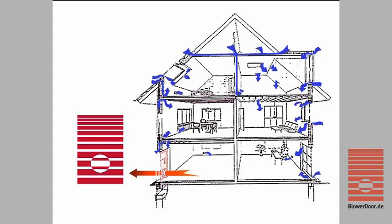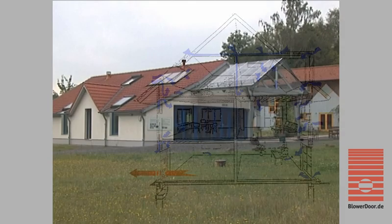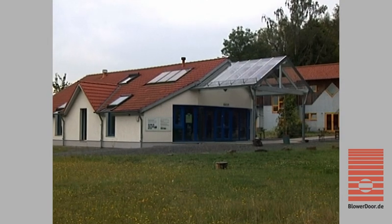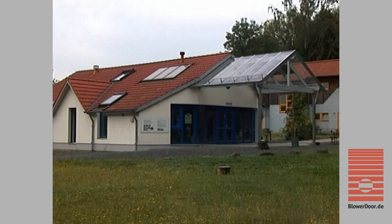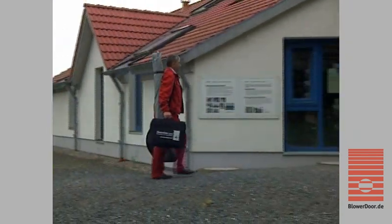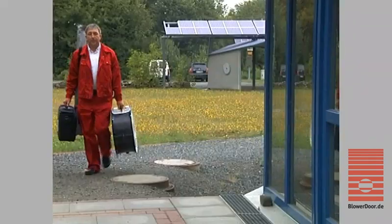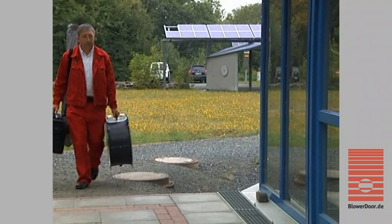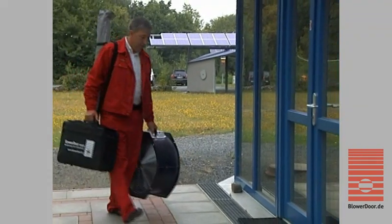outside air is continuously drawn into the building through holes and penetrations in the building's envelope, making these leaks easy to locate. The specific building tightness measurement is the air change rate N50.